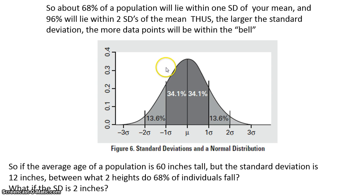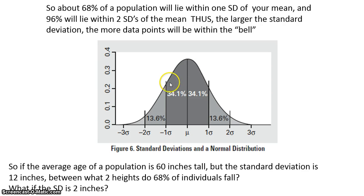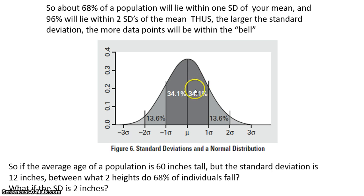96% of our data lies within two standard deviations, always. So if we know what our standard deviation is and we know what our average is, we can basically say that 68% of our data lies within plus or minus one standard deviation, and 96% of our data lies within two standard deviations.